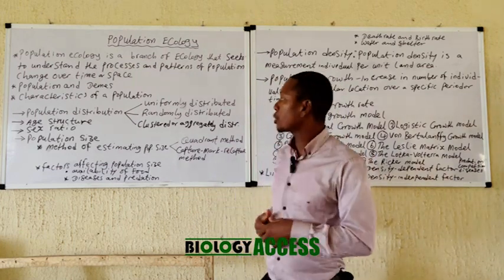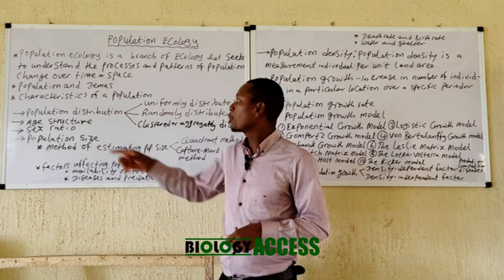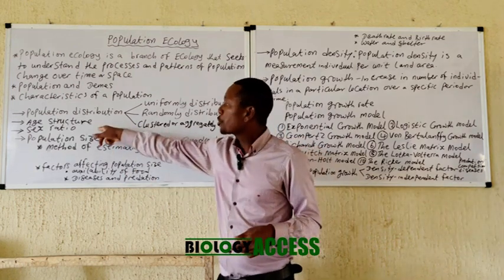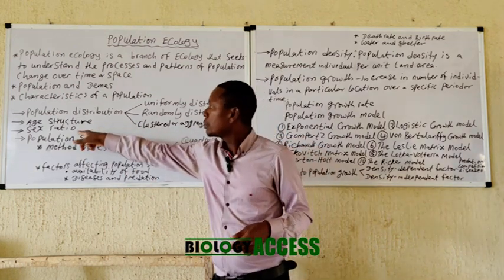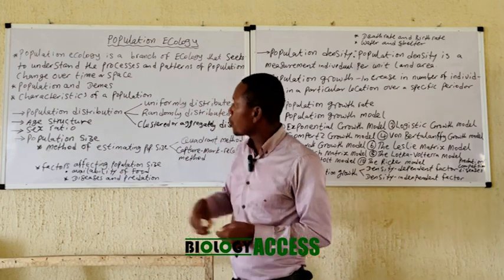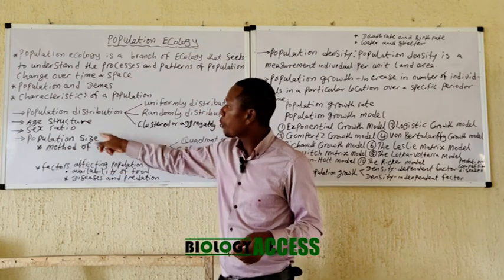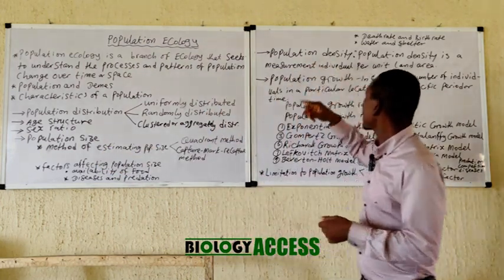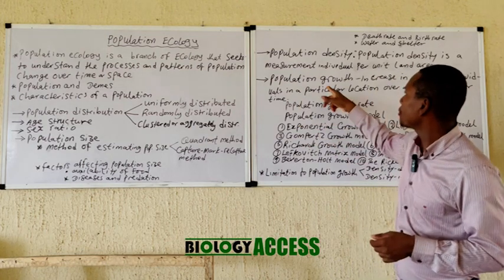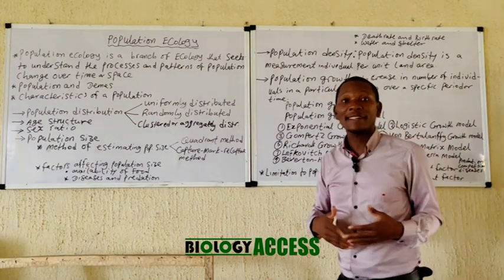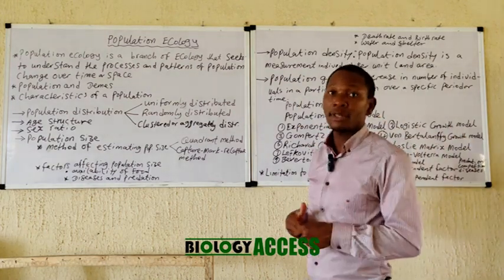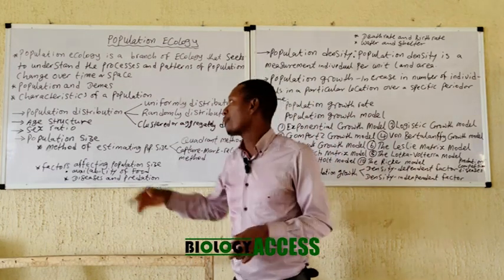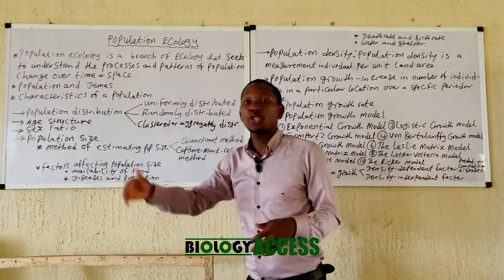We are going to look at some characteristics of population: population distribution, age structure, sex ratio, population size, population density, and population growth. These are some of the characteristics that a population has.